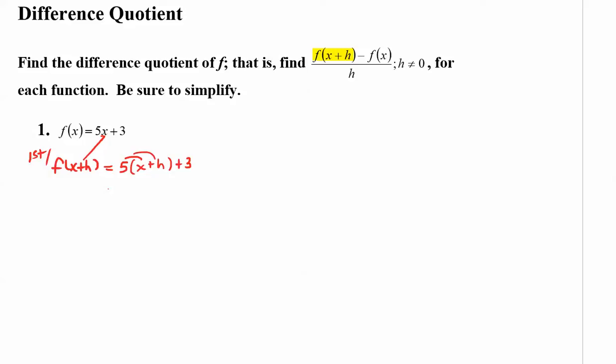Clear parentheses, you get 5x plus 5h plus 3, and there aren't any like terms there. So f of x plus h is equal to 5x plus 5h plus 3.